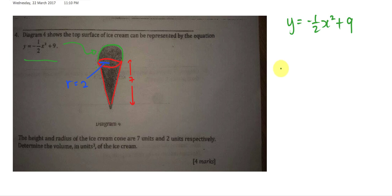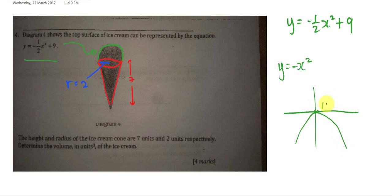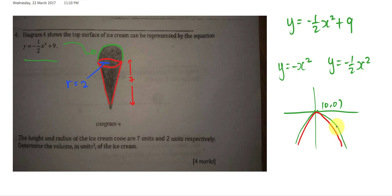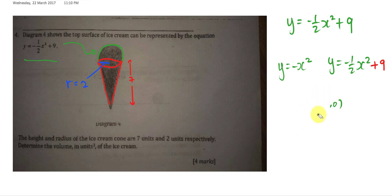If we have y equals negative x squared, the curve will look like an upside-down parabola passing through the origin, with a maximum at (0, 0). If I add the half coefficient to x squared, the curve becomes slightly wider but still touches at (0, 0). When I add nine, the curve shifts up nine units, so the maximum becomes nine.